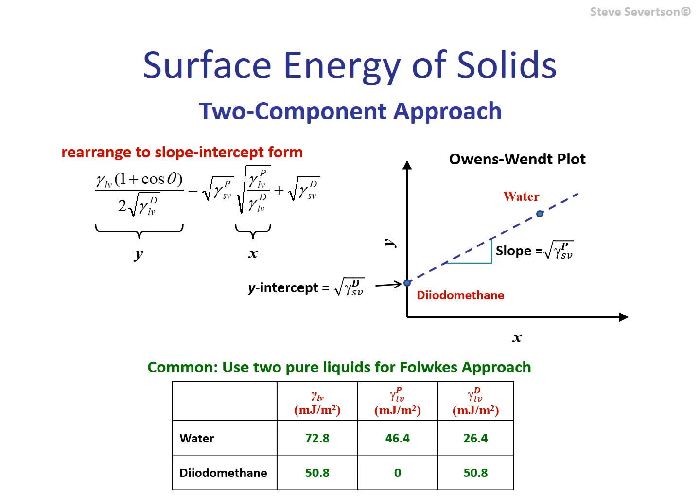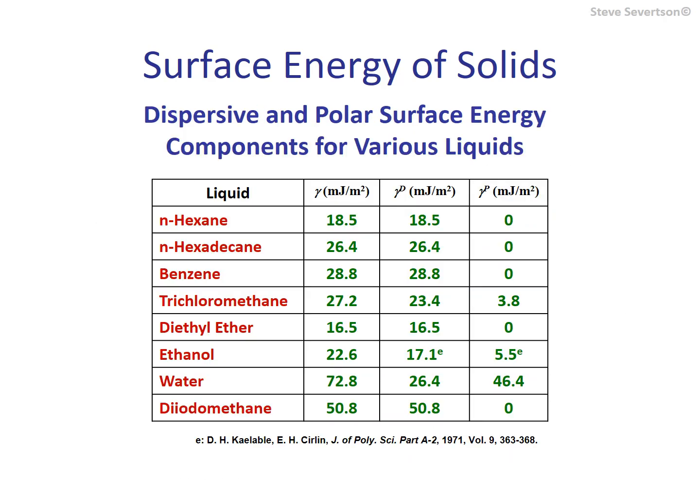In practice, the FOWKES approach tends to find greater use, especially when it comes to polymeric materials. The table shown here lists surface tension values split into contributions from lost dispersive interactions and lost polar interactions. Note that compounds such as diethyl ether and diiodomethane are polar compounds but have zero contribution to the polar component of surface energy. This is because polar interactions here are defined as those involving hydrogen bonding, while dispersive components encompass all other types of van der Waals interactions.